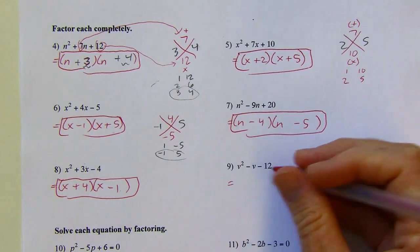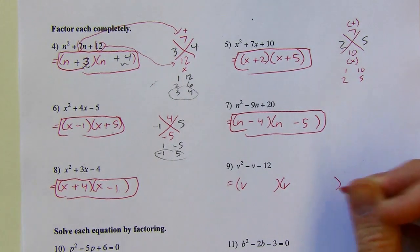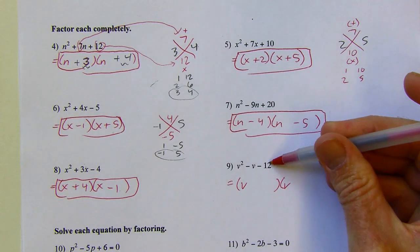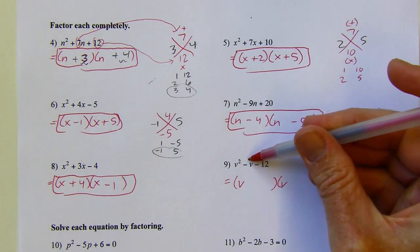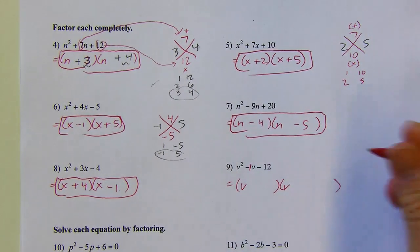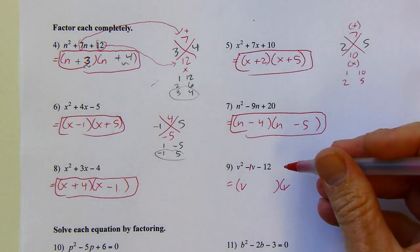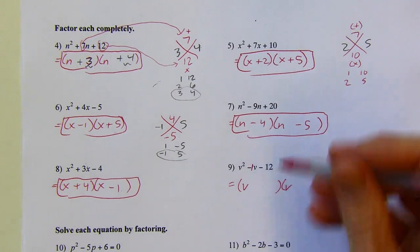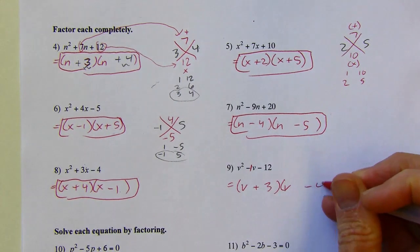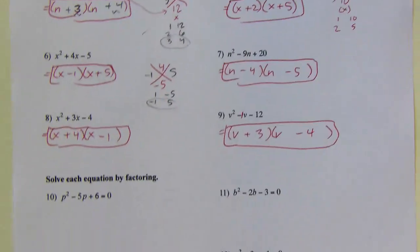This next one starts with v's instead of x's or n's. I want two numbers that multiply to 12: 1 and 12, 2 and 6, 3 and 4. And I want two numbers where I can add or subtract to get negative 1. The 3 and 4 sound good because they're only 1 apart. A positive 3 and a negative 4 would work — those multiply to negative 12 and add to negative 1. That's my winning combo.